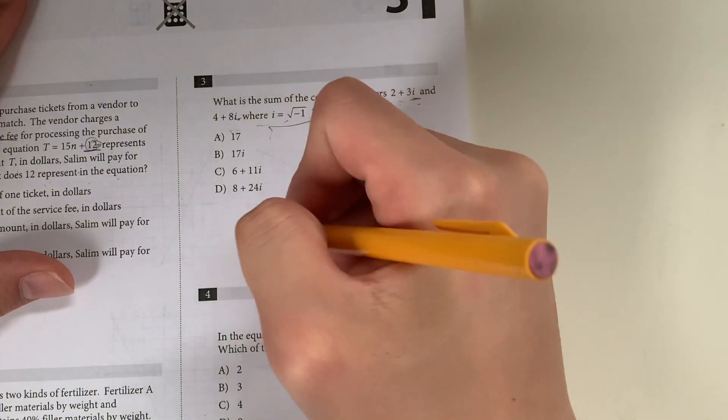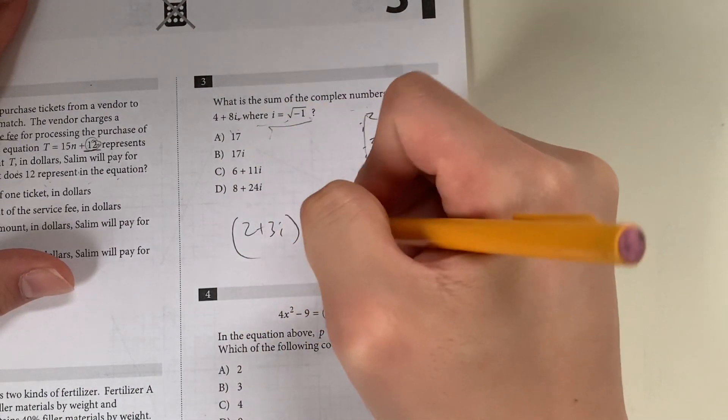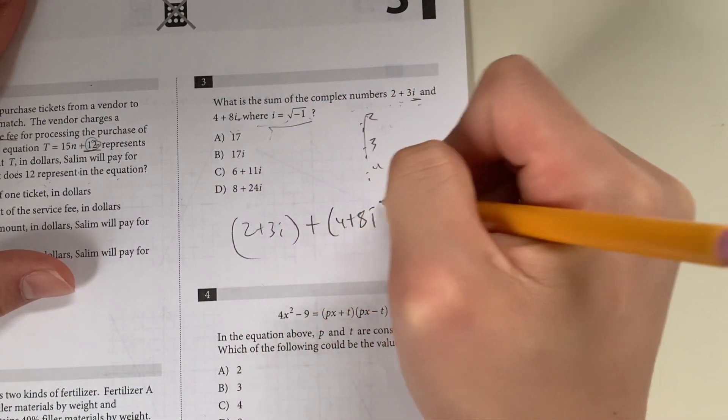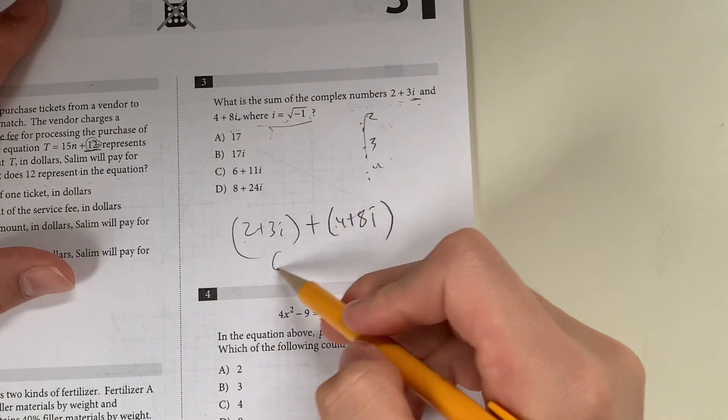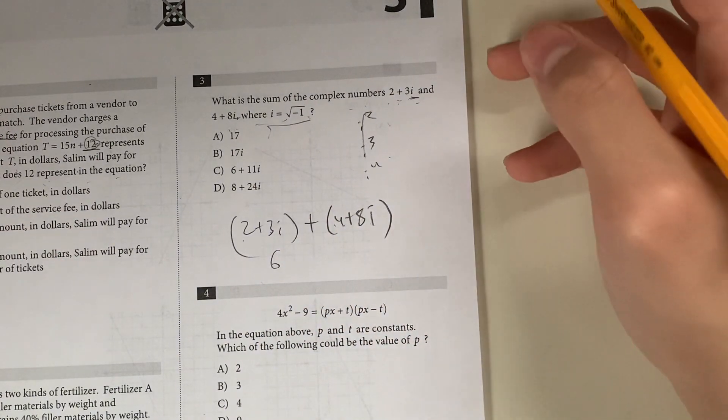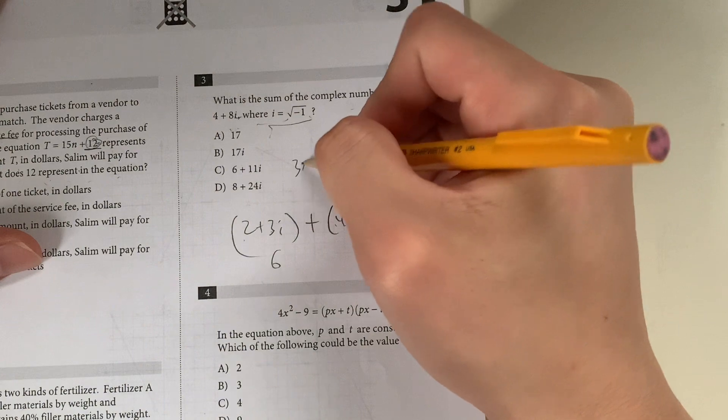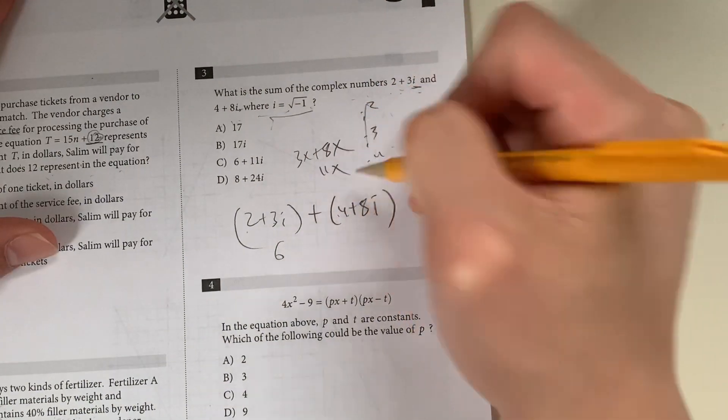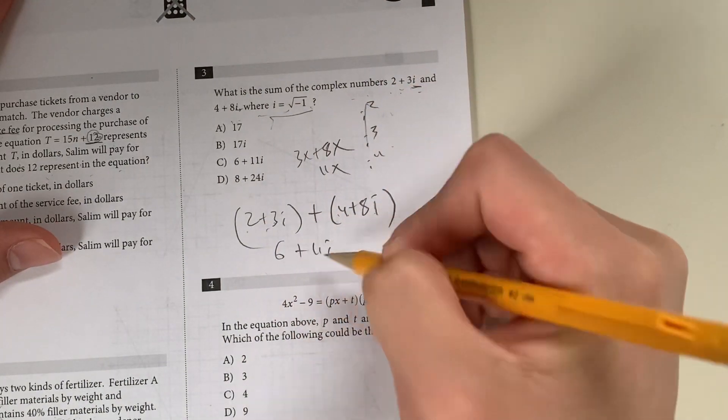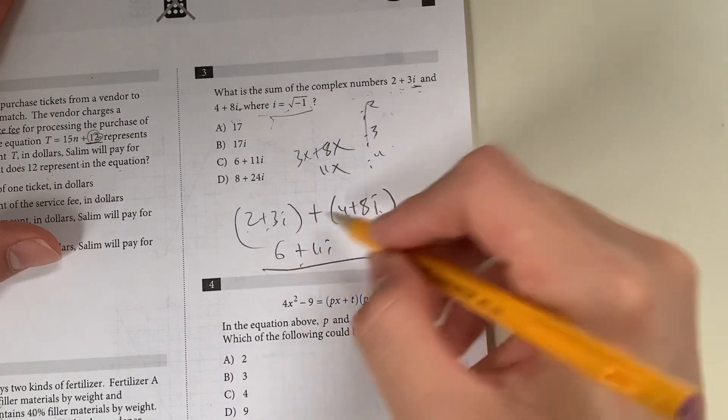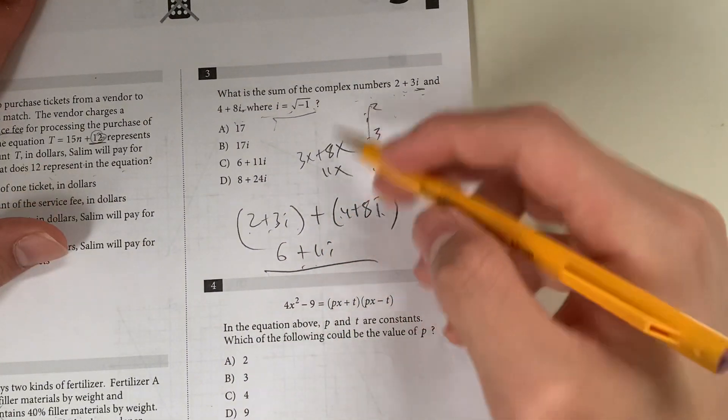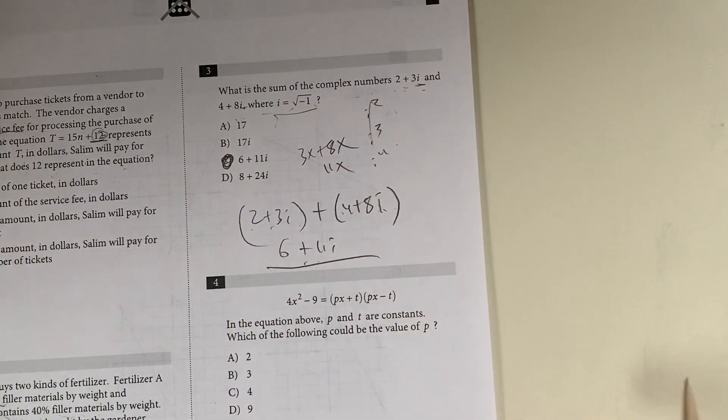In this case, you don't actually have to do anything because 2 plus 3i and the sum of that, you just add them, 4 plus 8i. That equals 2 plus 4 is 6, 3i plus 8i. You just add them like normal variables, like 3x plus 8x gives you 11x. So in this case, it's just 11i. Your answer should be C, 6 plus 11i.